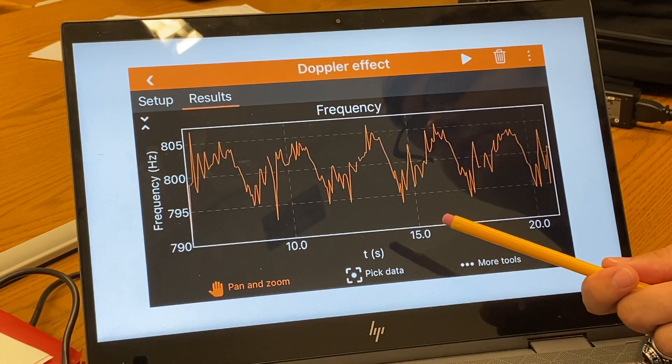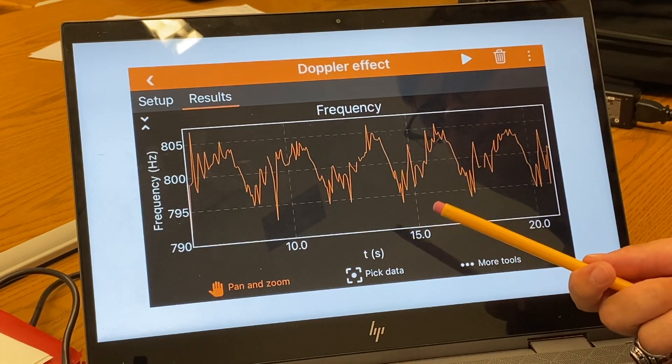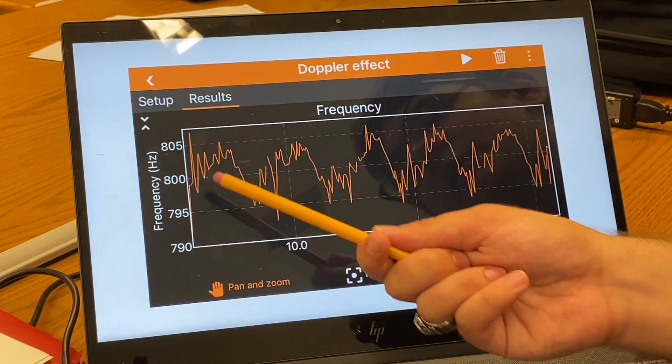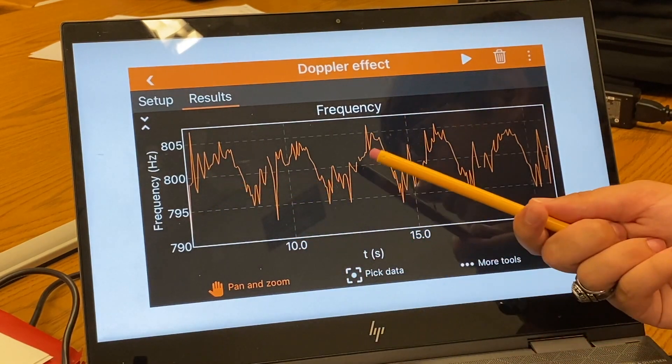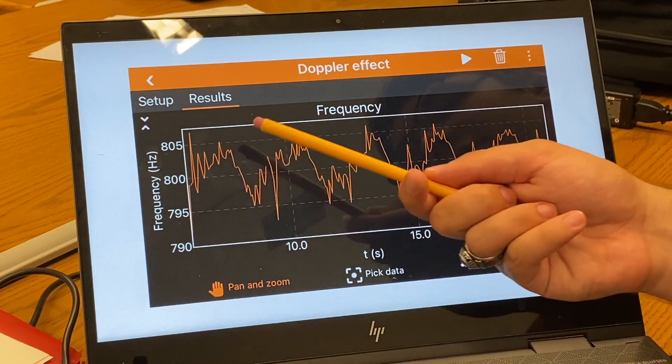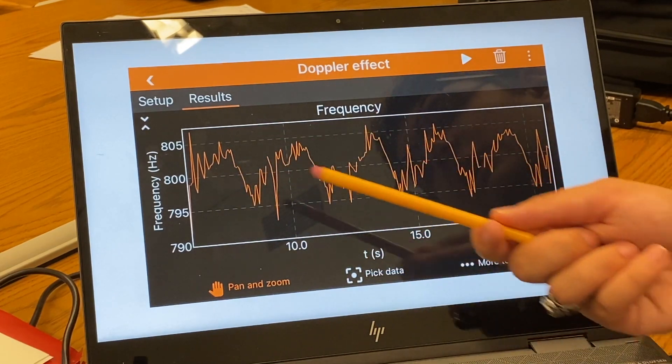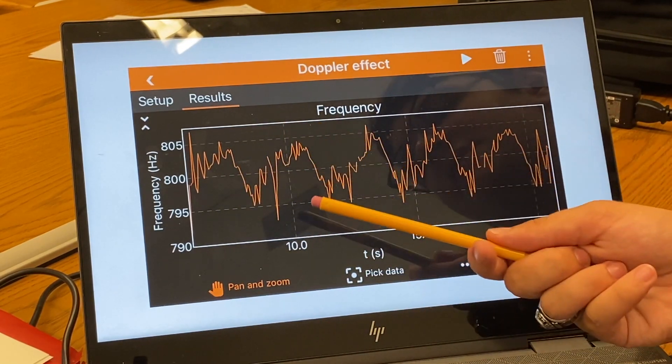This is the data we collected. When we collected this data, we were using a sound of 800 Hz. As you can see though, the frequency recorded was not just 800 Hz, but instead moves up and down. It goes as high as 805 and as low as 795.